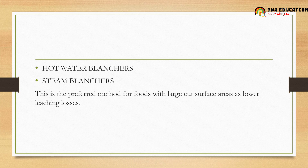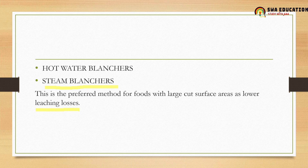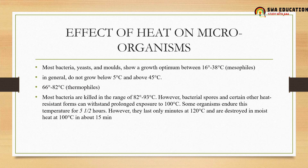Blanching can be done using hot water blanchers or steam blanchers. The steam blancher is mostly preferred in the food industry because there is less leaching loss. Leaching loss means that water-soluble vitamins, minerals, and nutrients present in fruits and vegetables get lost during blanching. This leaching can be reduced when using steam blanching.